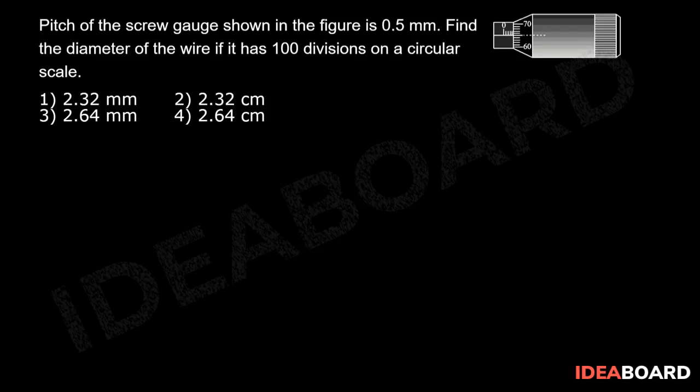Now, measured value by using an ideal screw gauge is equal to main scale reading or pitch scale reading plus head scale reading times least count.